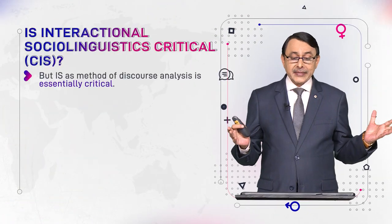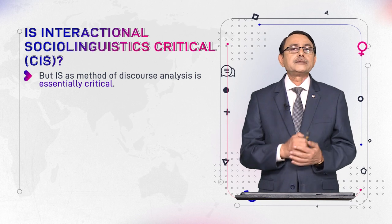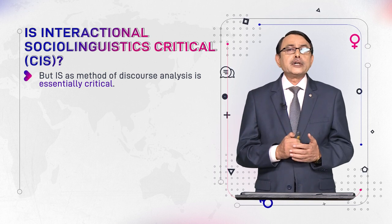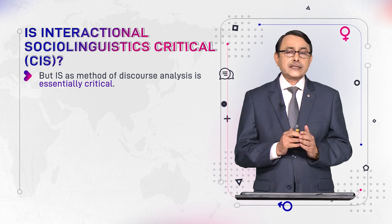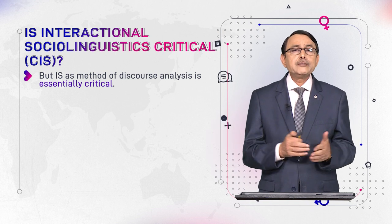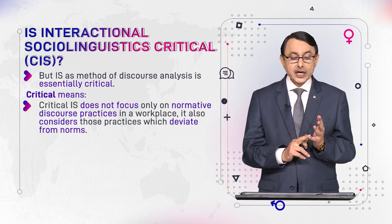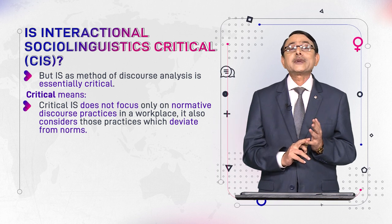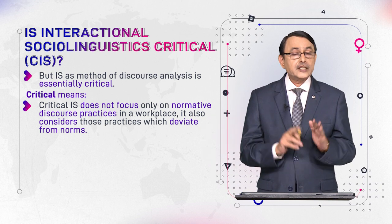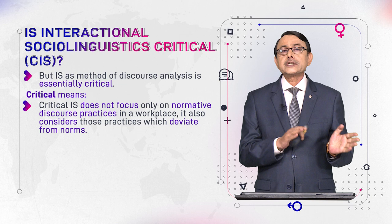IS as a method of discourse and interaction analysis is essentially critical. This is the addition we want to make: IS does not ignore mismatches — it is essentially critical. Criticality means, number one, Critical IS does not focus only on normative discourse practices, the discourse features which conform to the norm. It also considers those practices which deviate from them.